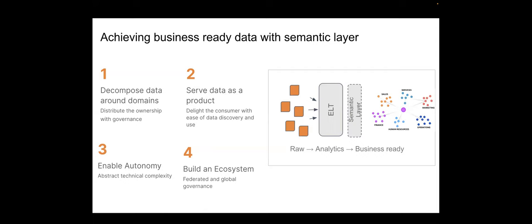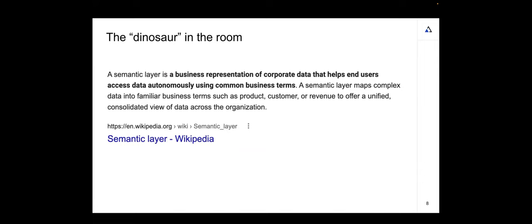When thinking about those four important criteria to achieve business-ready data, there is a need to have a semantic layer. Before getting into how the semantic layer enables the data mesh concept, I want to talk about the dinosaur in the room. You may already be aware of what a semantic layer is — it is not a new concept. A semantic layer has been around for maybe two decades; I think it was first introduced with Business Objects. Creating a semantic layer is creating a business representation of the data that helps end users access data autonomously using common business terms. If you want your data to talk the language of business, you need a semantic layer. It really maps complex data into familiar business terms.